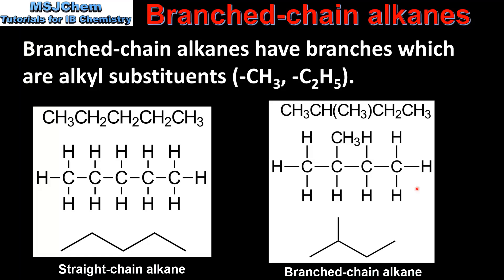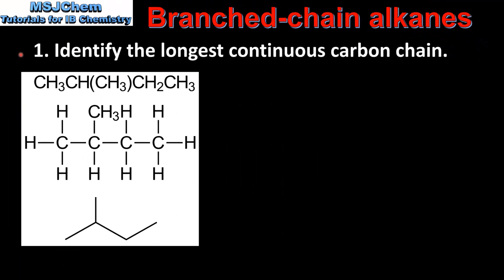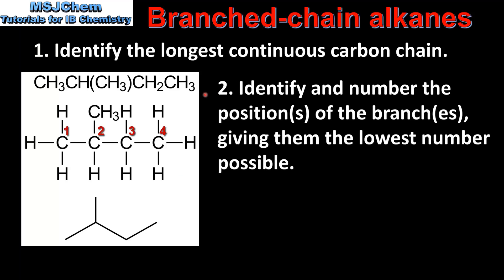We'll look at how to name this branched chain alkane in the next slide. The first step is to identify the longest continuous carbon chain. In this example on the left the longest continuous carbon chain is 4 carbon atoms. This gives us the root or stem of the name, which in this example is butane. The second step is to identify and number the position of the branches, giving them the lowest number possible. In this example we have a methyl group which is bonded to carbon number 2.